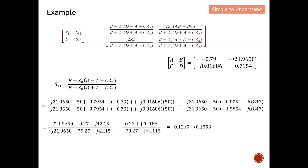If you use the app you can easily get this answer, but here I show the long-hand method in case you cannot use a calculator in an exam. I multiply through the terms, combine them, then multiply by 50 to arrive at the final S11 value. Due to time constraints I'll move a bit quicker so I have more time for the conclusion.